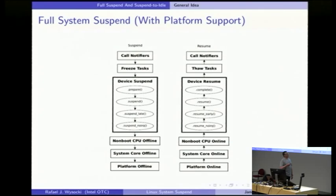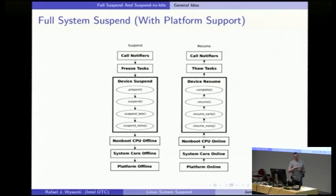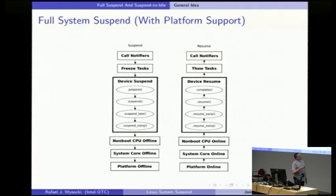The next thing done is the freezing of tasks — it's about taking user space out of the picture so we don't have to worry about what user space may be doing during the next steps. User space may mess up things in many ways that are not really controllable. If you think about things like mmap, for example, registers of a device can be memory-mapped so user space can access them directly, and that's very difficult to intercept. It's better to just get rid of user space entirely.